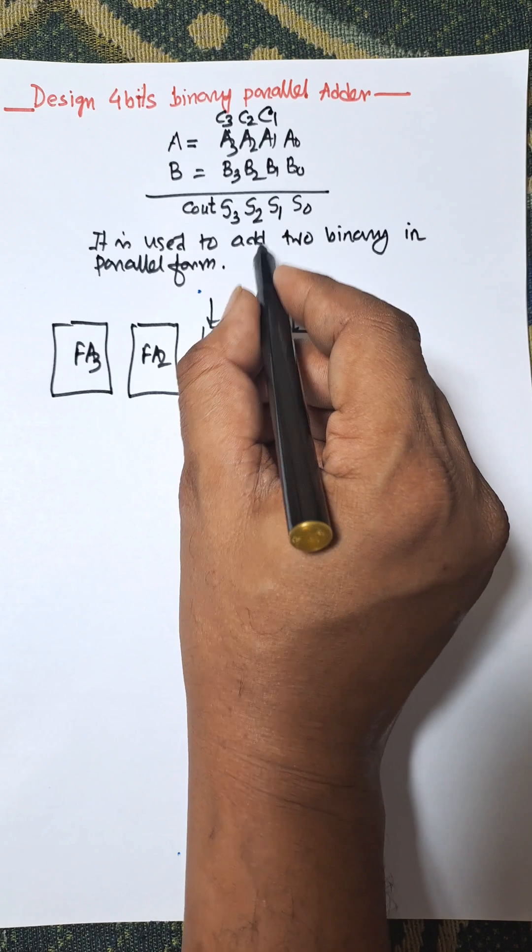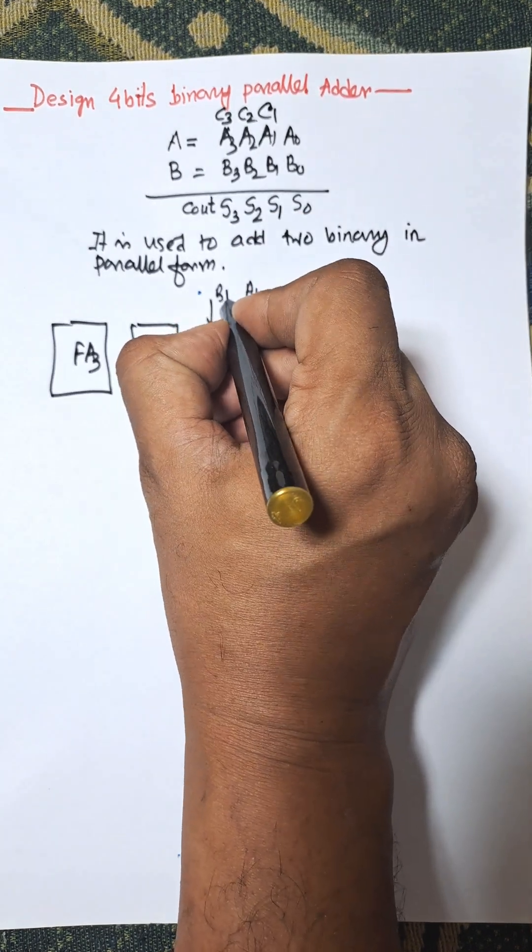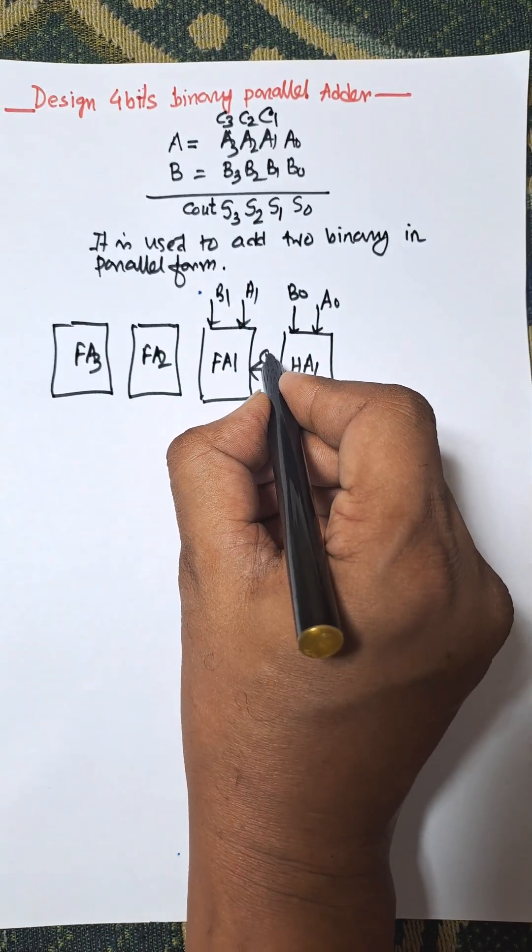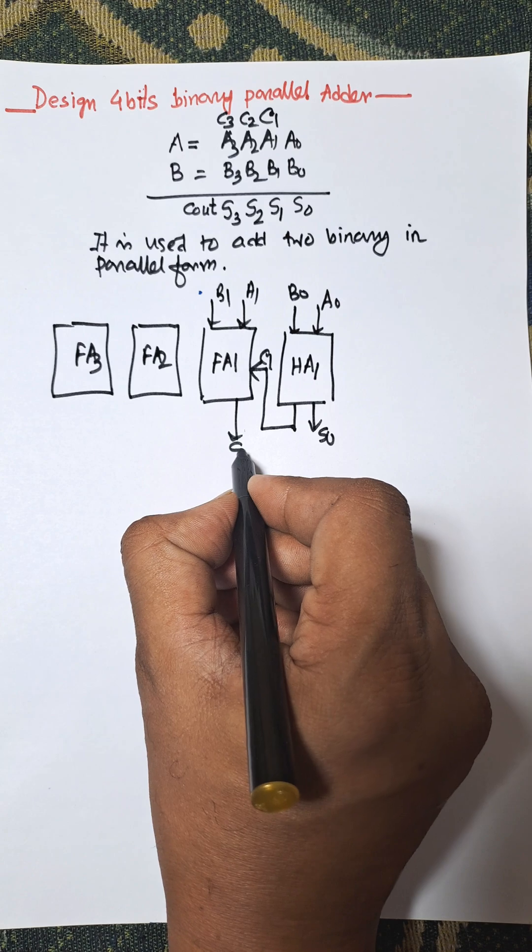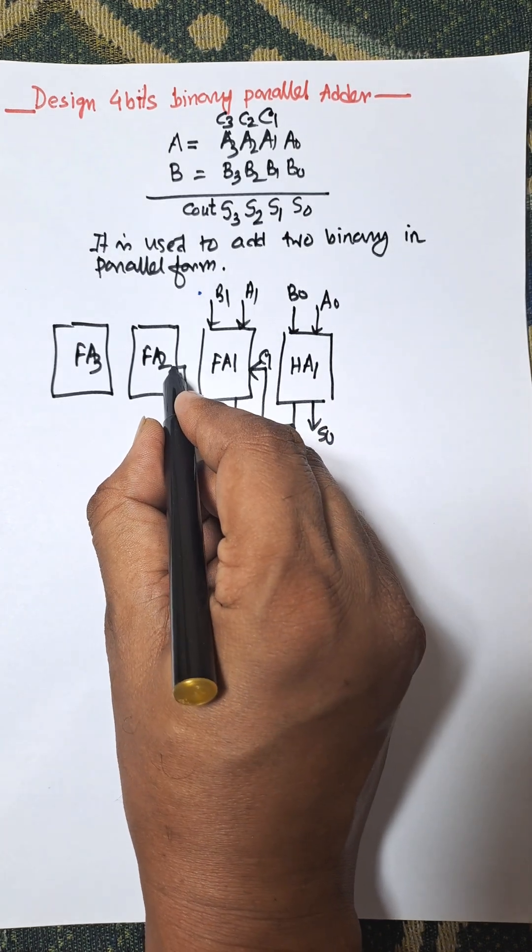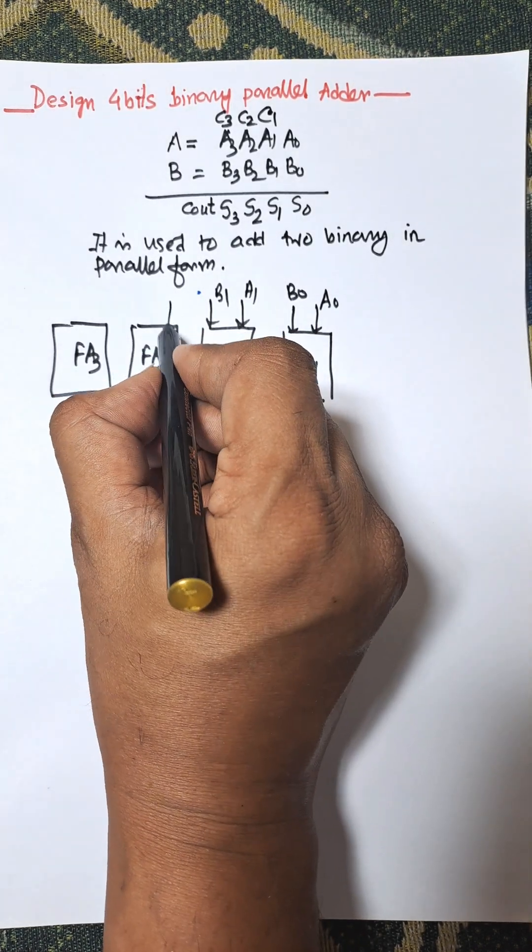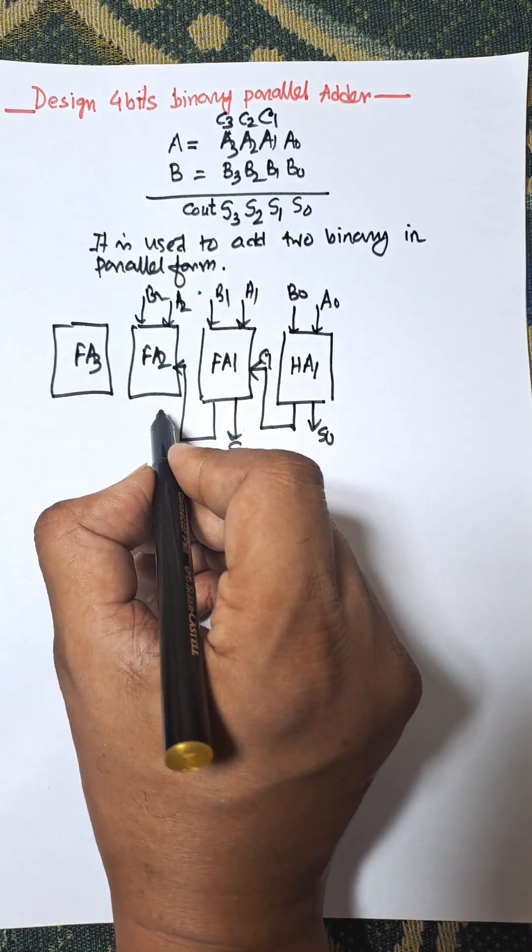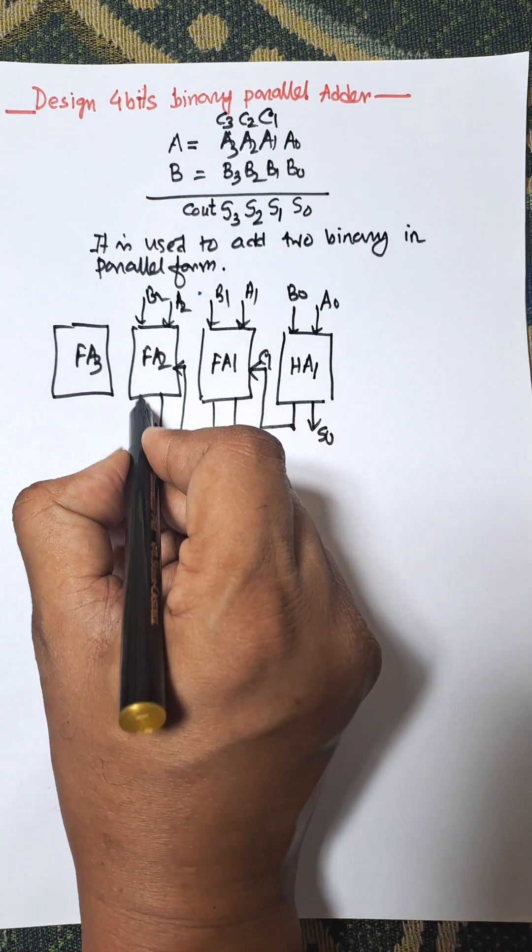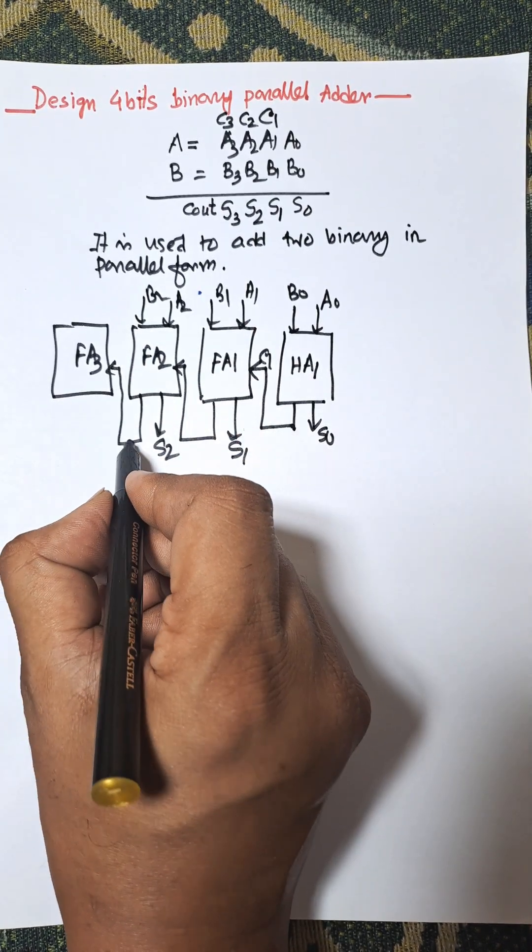There are two inputs A1 and B1, and there is carry C1. Then it produces sum S1, and the carry goes to the next full adder. That is A2 and B2, which produces sum S2, and another carry goes to C3.